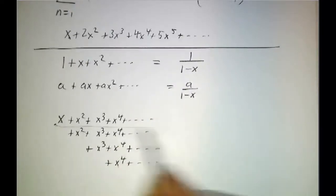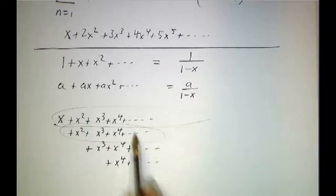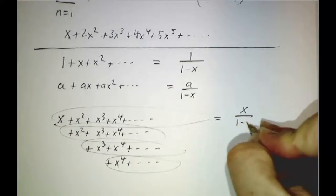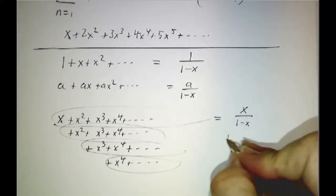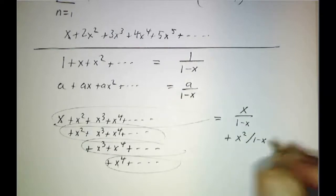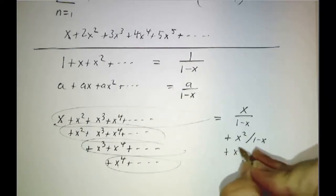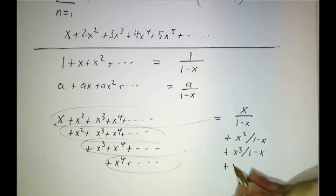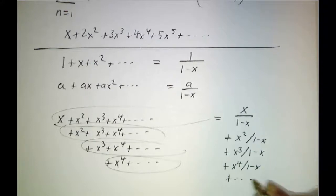And now we're going to add it up one row at a time. So the first row gives us x divided by 1 minus x. The second row gives us x squared divided by 1 minus x. The third row gives us x cubed divided by 1 minus x. The fourth row gives us x to the fourth over 1 minus x and so on.